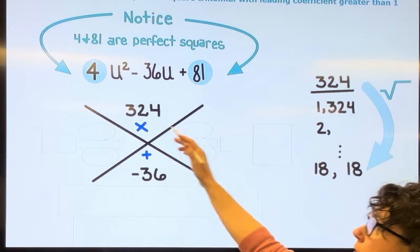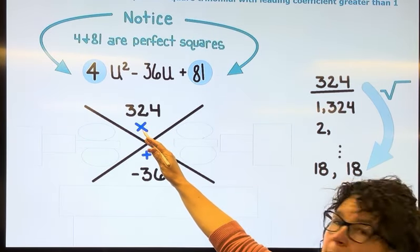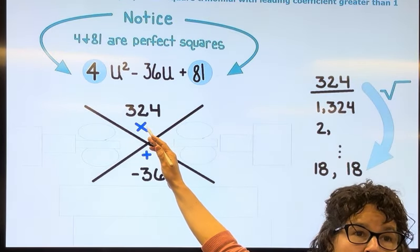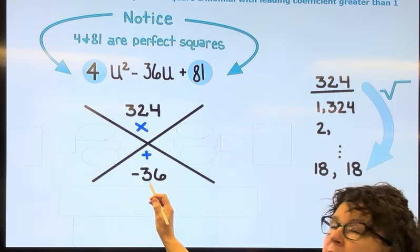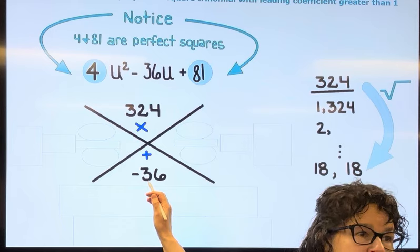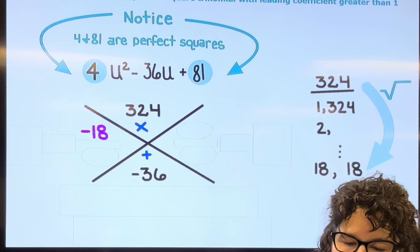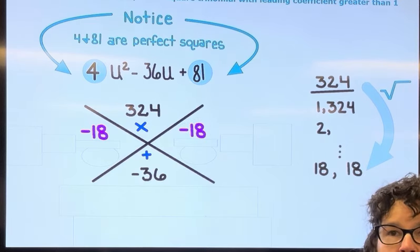And now I'm going to come over and think about that. If two numbers multiply to get a positive 324, those numbers are either both positive or both negative. If they add up to negative 36, I now know they're both negative. And what do you know? It's going to be negative 18 and negative 18.